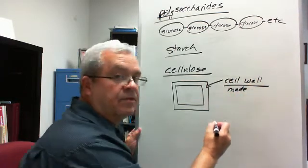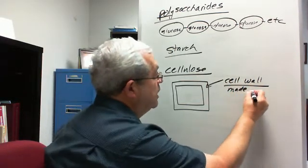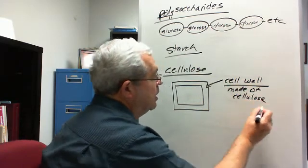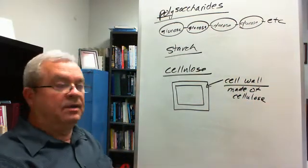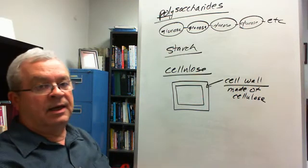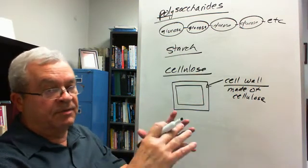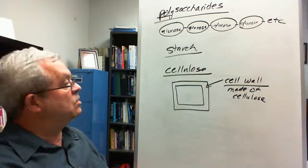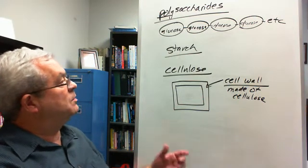Made primarily of cellulose—I'll just put made of cellulose, but it's at least made primarily of cellulose. Woody trees and things have something in addition to cellulose, but they're still primarily made of cellulose.